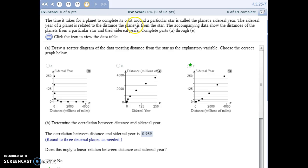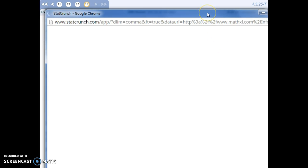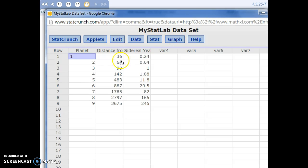Number 14, our explanatory variable is how far away a planet is from the star that it orbits. And then our response variable is how long it takes that planet to complete an orbit, which is called the sidereal year. So, we're going to start by drawing a scatter diagram. So, let me open this up in StatCrunch.